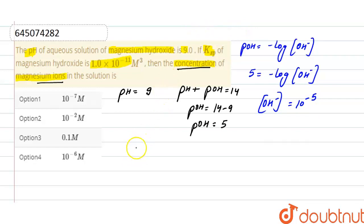Now in the solution, this magnesium hydroxide will dissociate as magnesium ions and 2 OH ions.